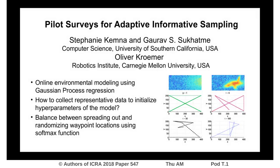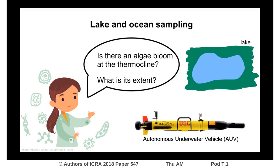Hi everyone, I'm Stephanie and I am presenting our paper on pilot surveys for adaptive informative sampling. The premise of our paper is as follows: imagine a biologist wants to map an algae bloom at a certain depth in the lake using an autonomous underwater vehicle. The question is, how can we efficiently create such a map?